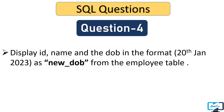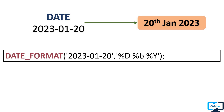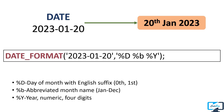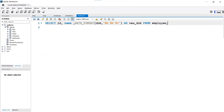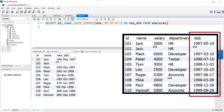Our question is: display id, name, and the date of birth in a given format as 'new_date_of_birth' from the employee table. We use %D to display the day of the month, %b to display the name of the month, and %Y to display the year in four digits. Always remember you have to write the format inside single quotes. In the final query we pass date_of_birth as the date parameter and also fetch id and name from the employee table. Executing this query gives us exactly the desired output.